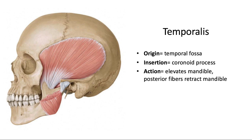If we cut away the masseter and the zygomatic arch, we see the full temporalis muscle. The temporalis originates in the temporal fossa — specifically along the temporal line, which we spent a lot of time on in our fossa video. It inserts into the coronoid process of the mandible and functions to elevate or close the mandible. The pull is parallel to those fibers, with the origin above the insertion, pulling up on the coronoid process. Secondarily, the posterior fibers, which run more obliquely, can retrude or retract the mandible.